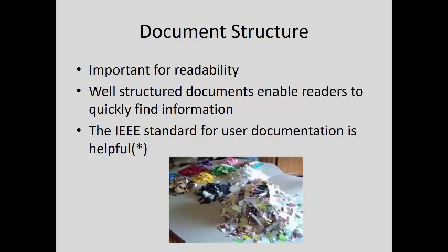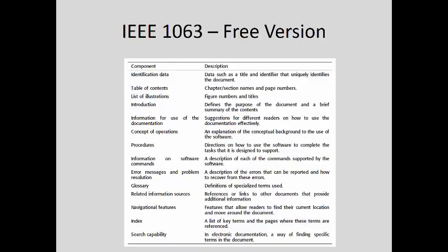Document structure is important for readability, and structured documents enable readers to quickly find information. The IEEE standard for user documentation is helpful — and at $94, it should be. Here's the free version from Somerville: the components you should have are identification data, table of contents, list of illustrations, introduction, information for use of the documentation, concept of operations, procedures, information on commands, error messages and problem resolution, a glossary, related information sources, navigational features, an index, and search capability if you have electronic documentation.